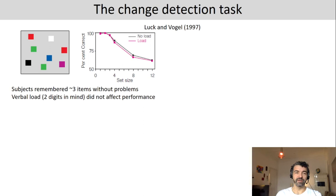This is exactly what Luck and Vogel found. In this graph, you can see on the x-axis the set size — how many items participants had to remember — and on the y-axis the percent correct. Whether there's one, two, or three items doesn't really matter; performance stays at around 100%. Then there's some drop from three to four, and then further drops at eight and twelve — quite a severe drop.